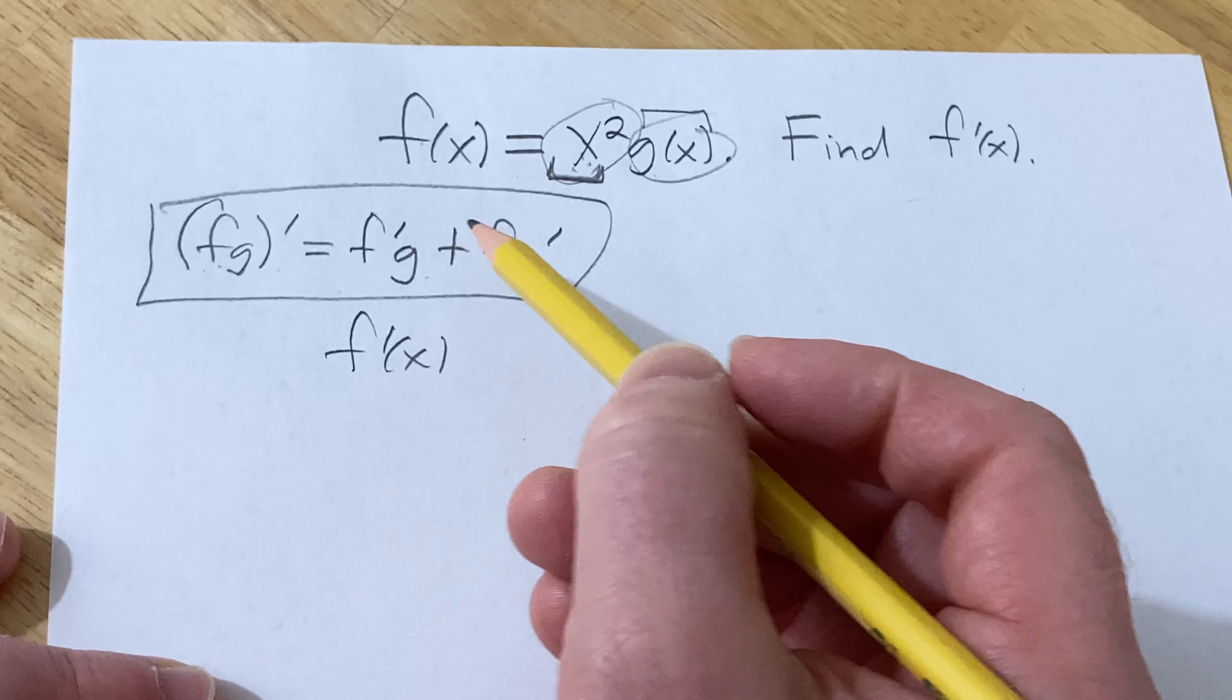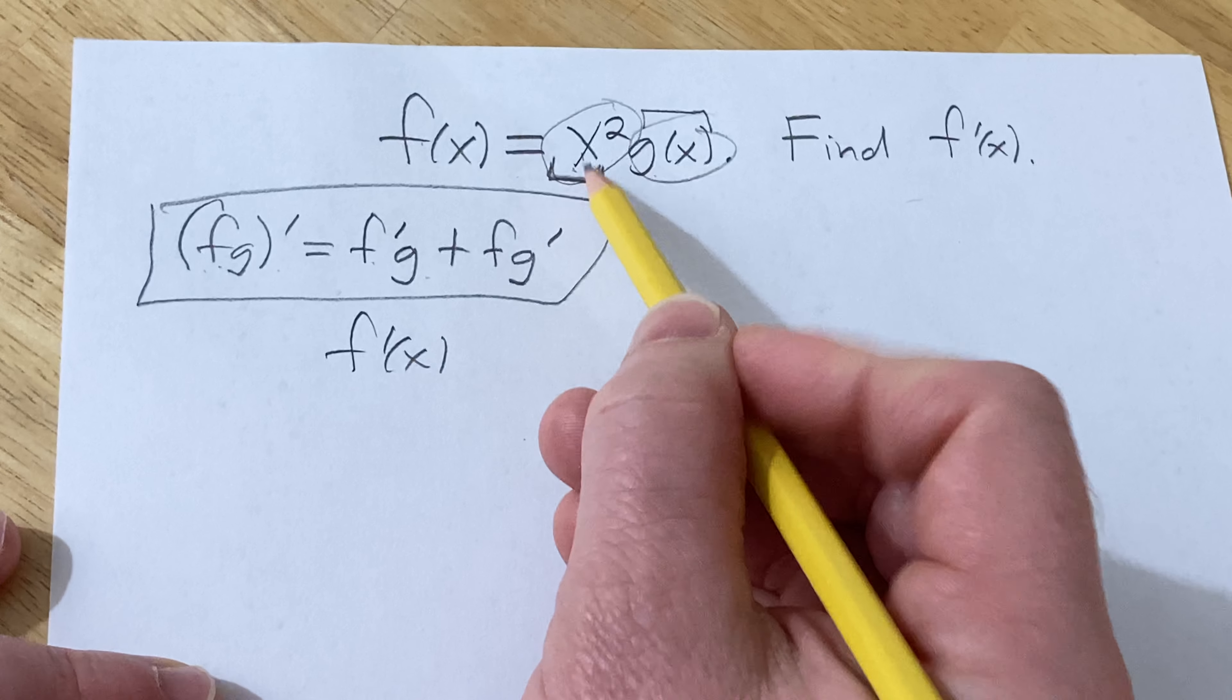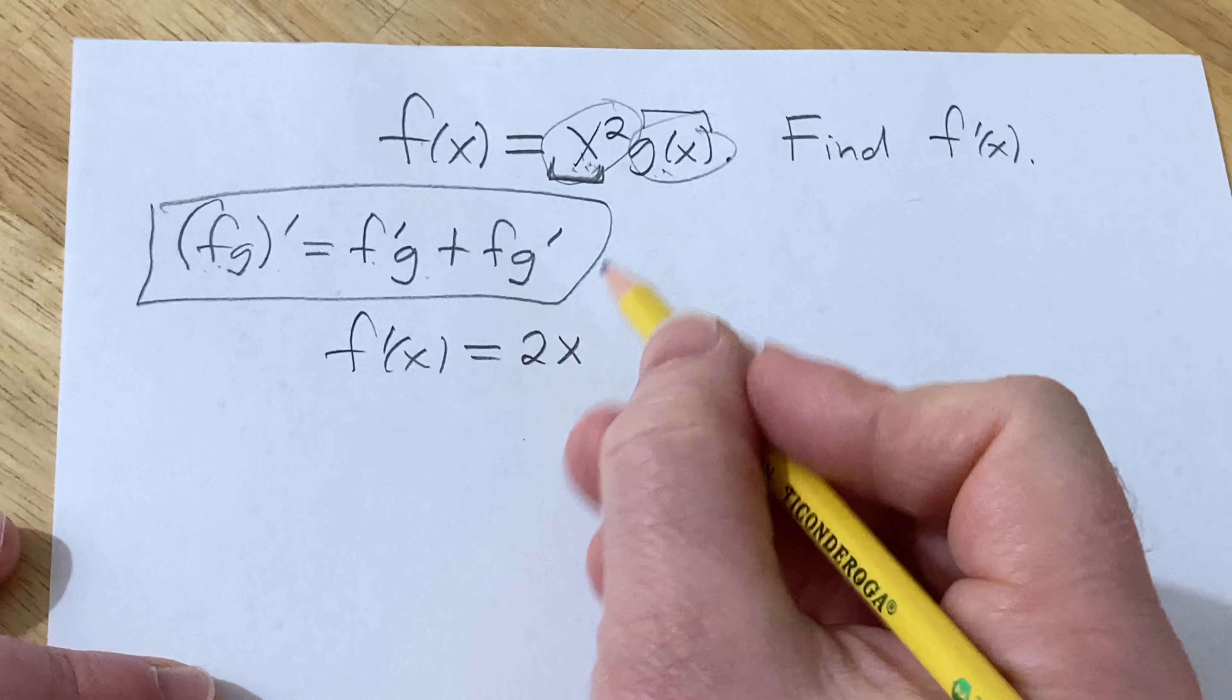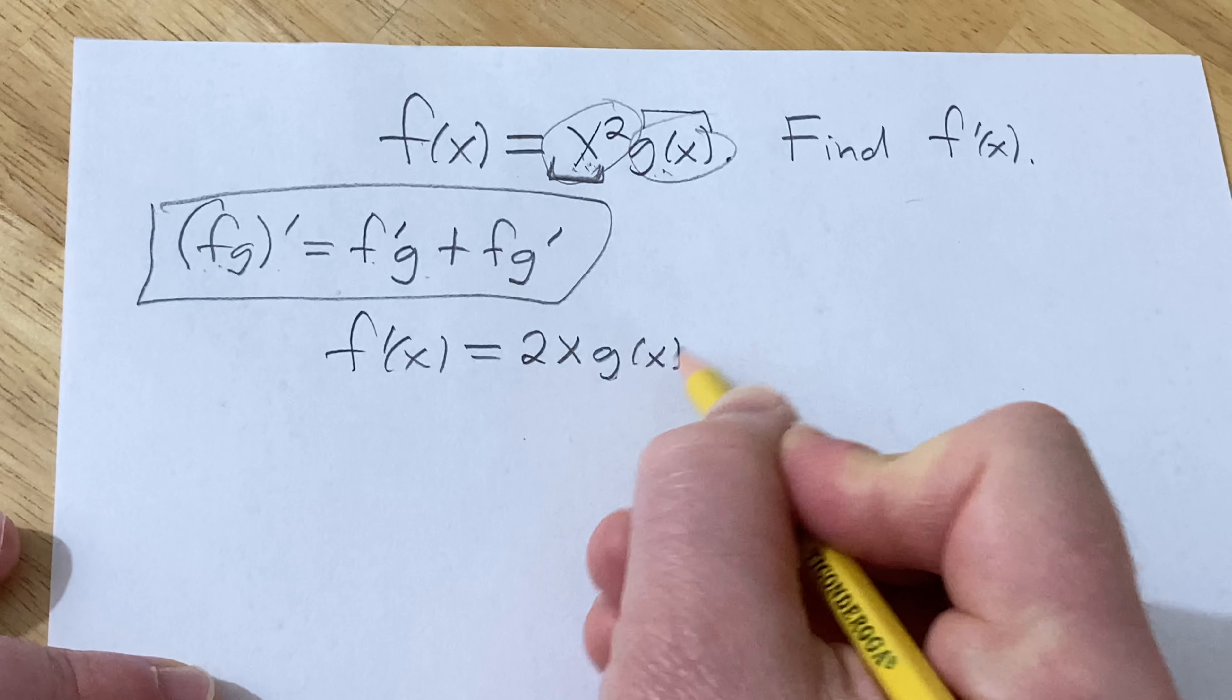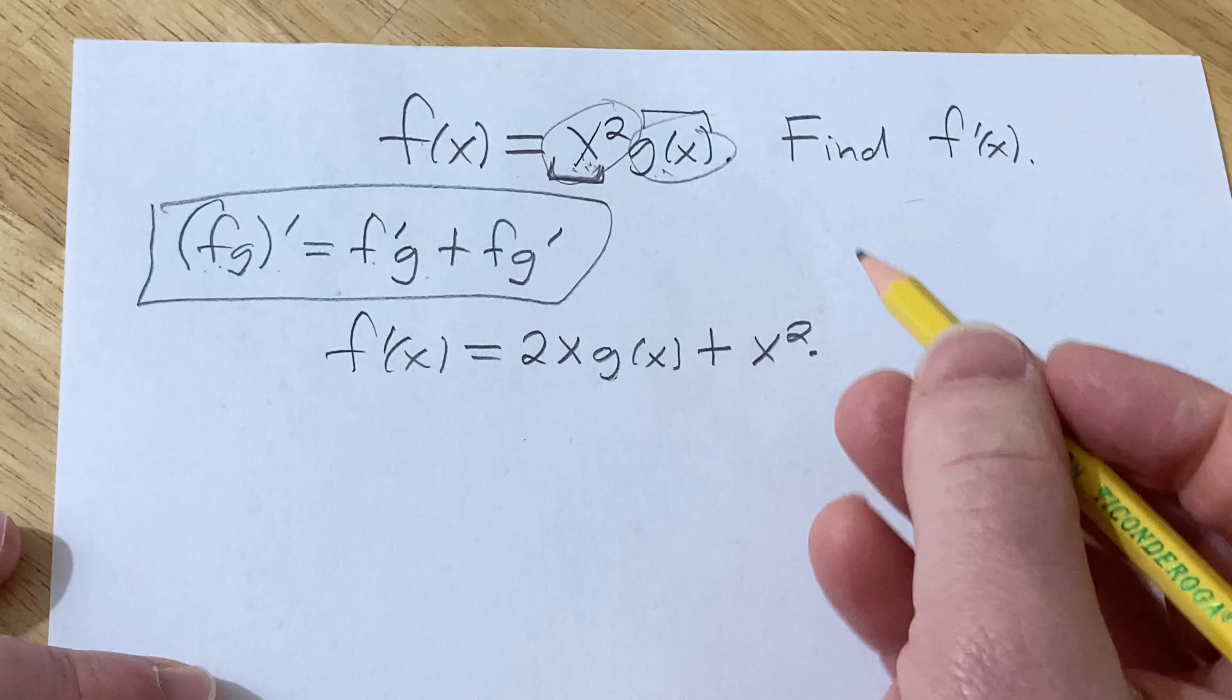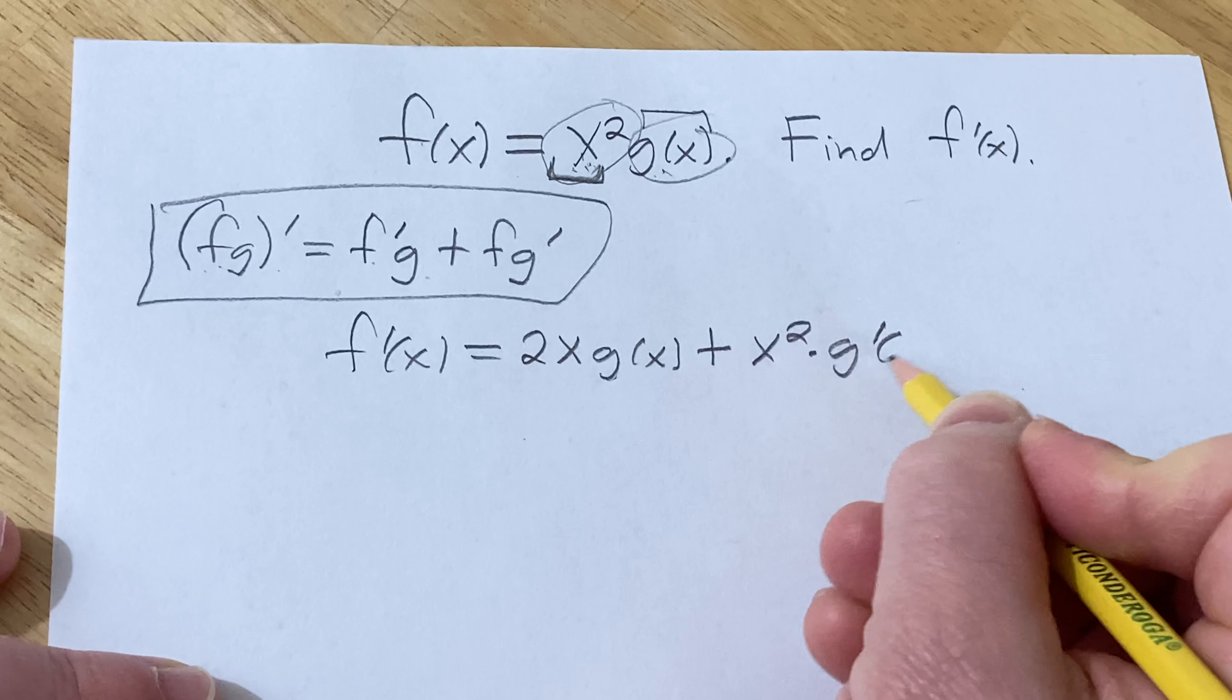So according to the rule it's the derivative of the first which in this case is simply 2x times the second which is g of x plus the first which is x squared times the derivative of the second which is simply g prime of x.